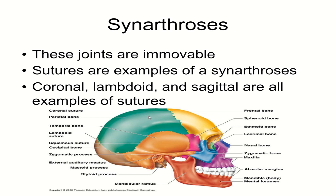Synarthroses are immovable joints. What that means is that the bones are fused, but they started out as two separate bones. The sutures of the skull are examples of synarthroses — so the coronal, the lambdoid, the sagittal — all of those are examples of synarthroses.